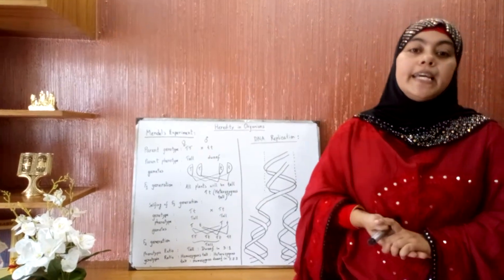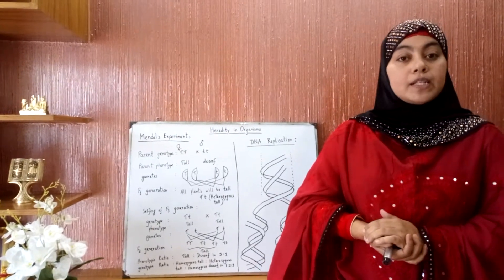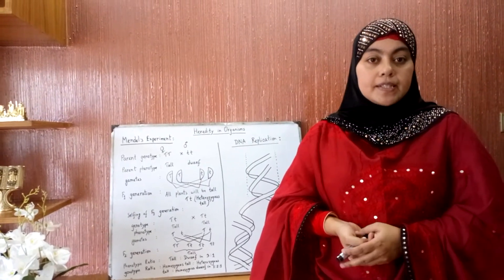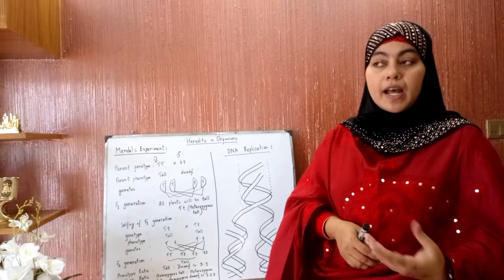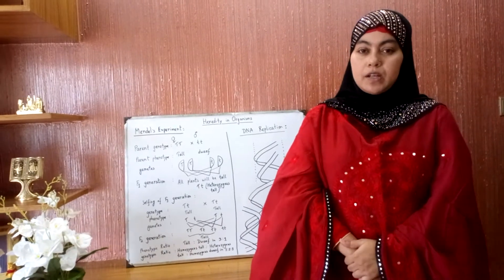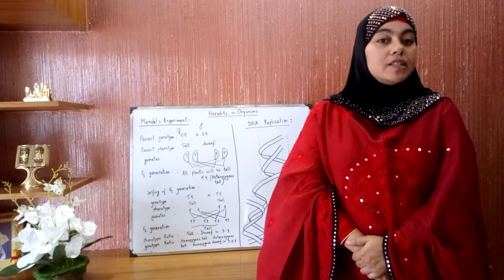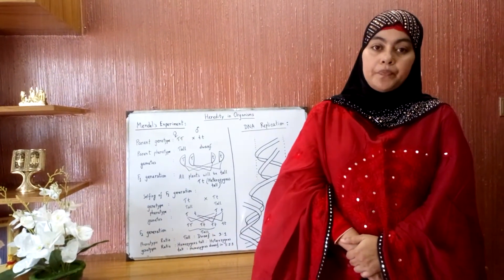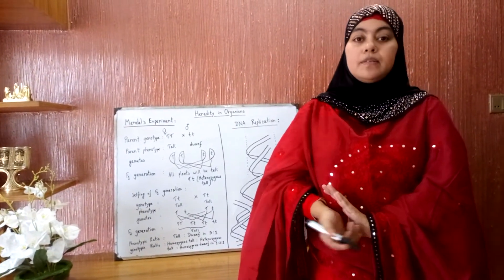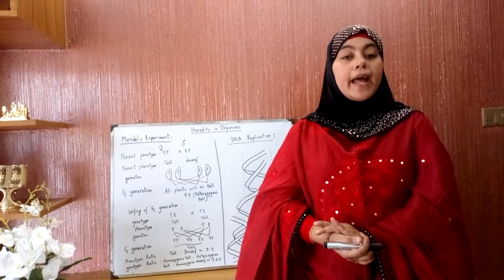Now we have to know about DNA replication. In the previous class, we learned that Watson and Crick discovered the double helix model of DNA. Watson and Crick in 1956 also described the DNA replication process. Scientists say there may be three methods of DNA replication: one is the conservative method, another is the semi-conservative method, and another is the dispersive method. In your book there is only a description of the semi-conservative method.